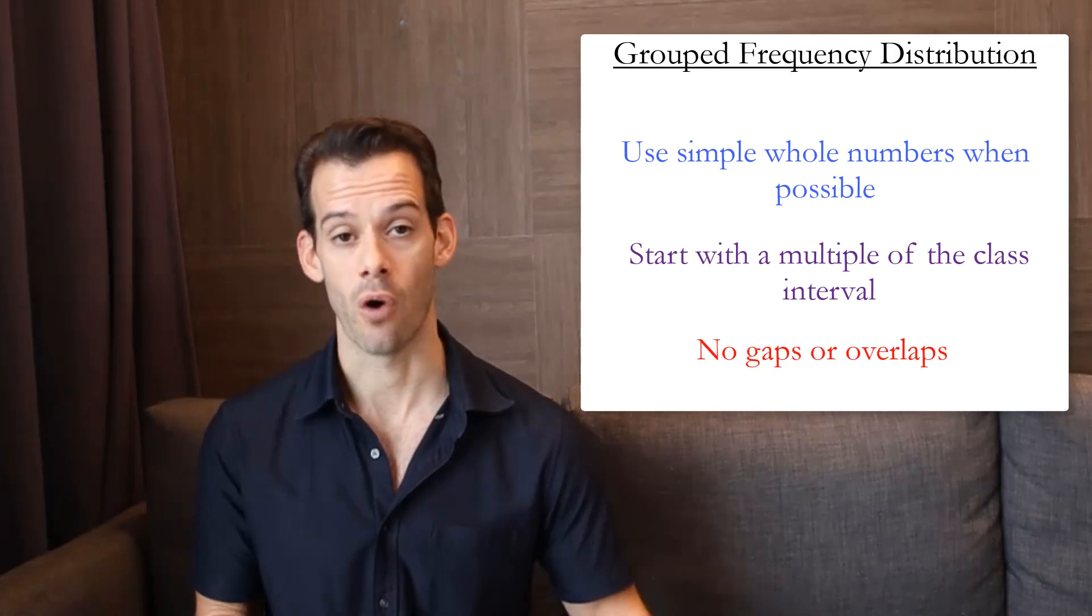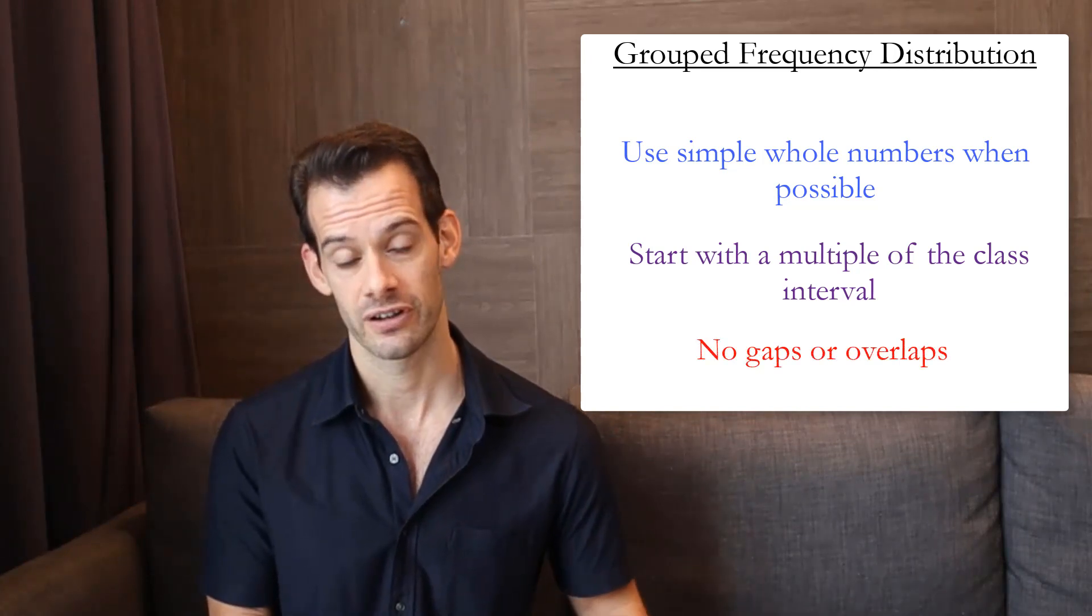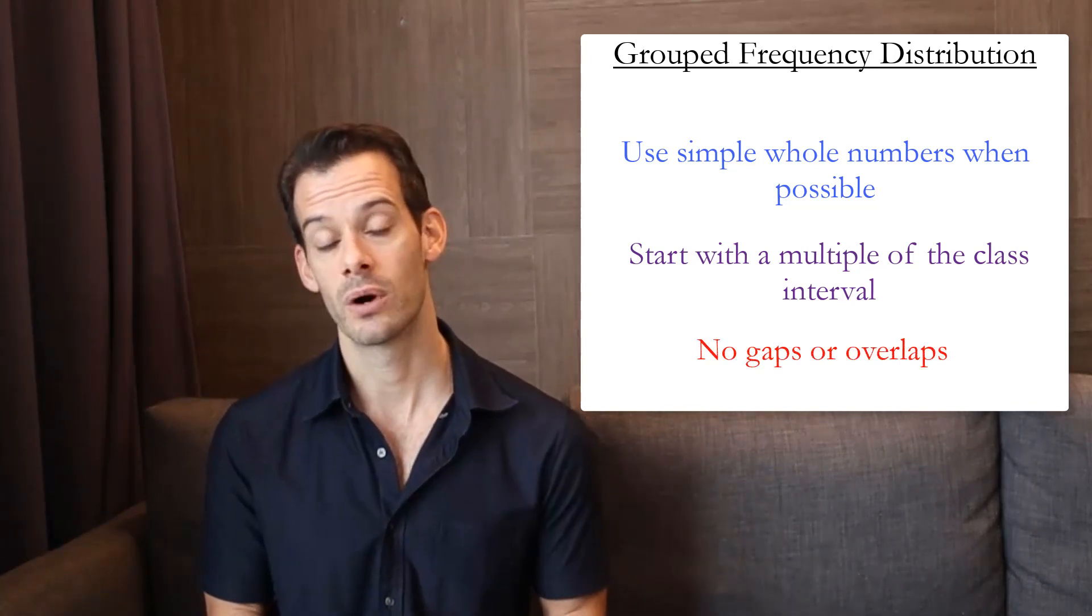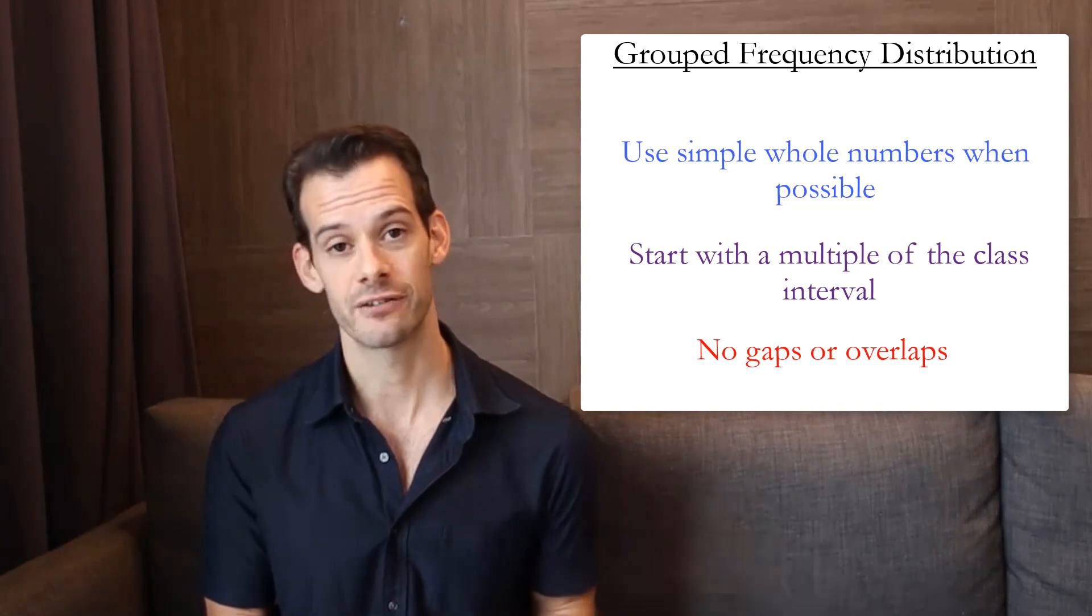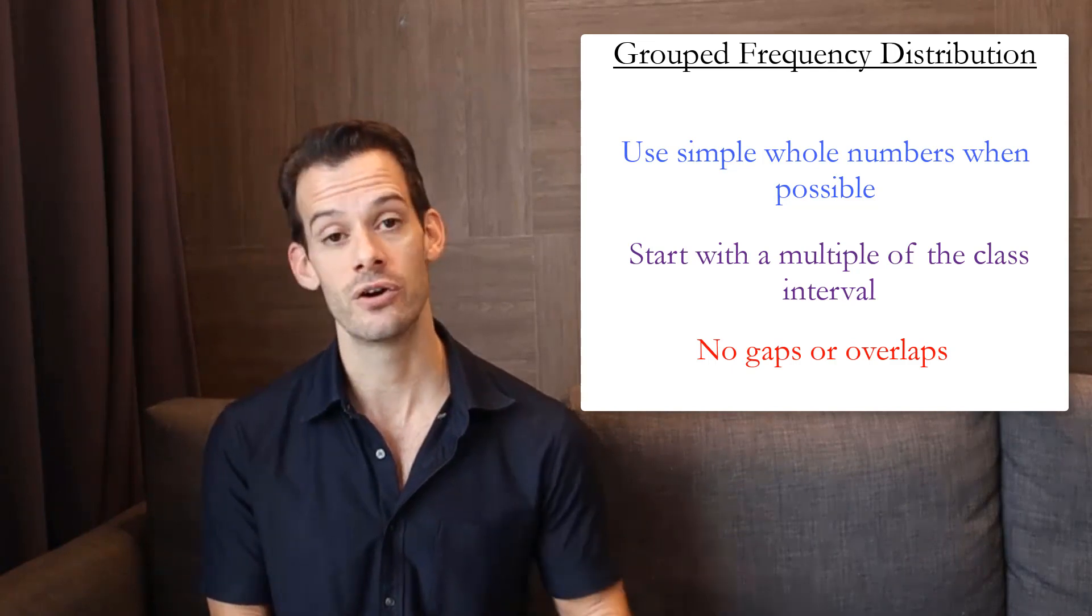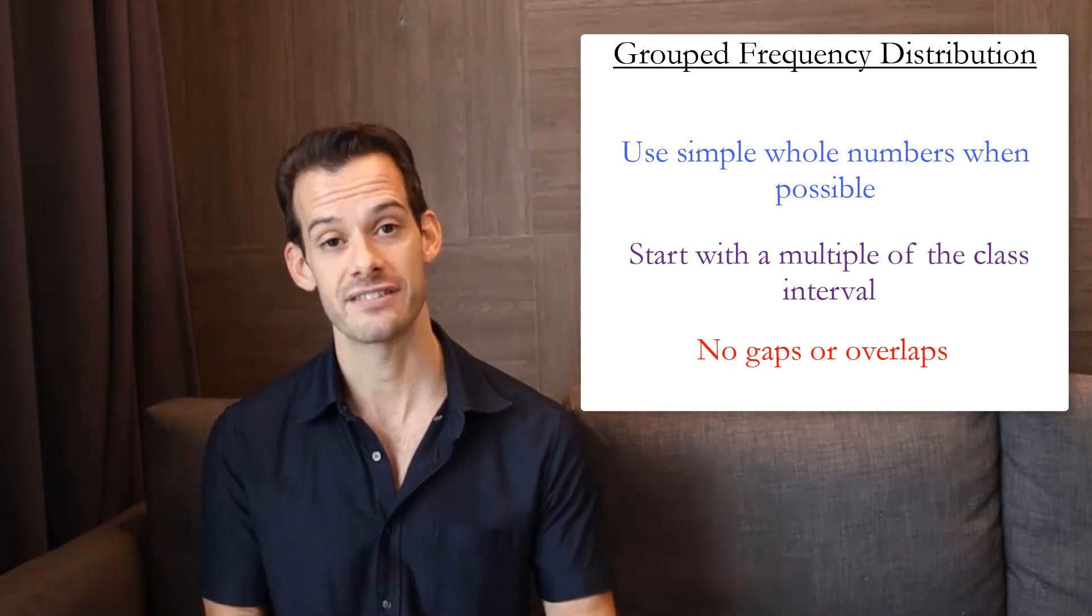Finally, we want to make sure that there's no gaps or overlaps in our class intervals. So just like before, we want to make sure we have a smooth transition from the lowest value of x to the highest value of x in our sample. And this means that we'll include a row for a class interval even if it has a frequency of 0.